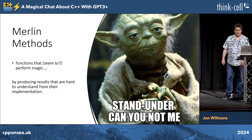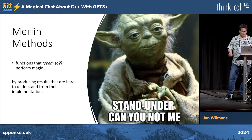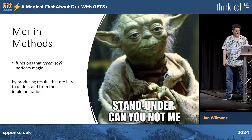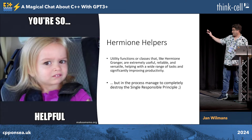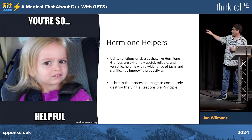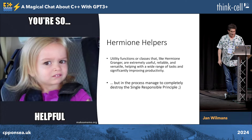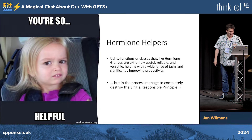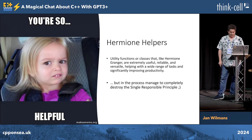And of course we have a Merlin method — this is not Merlin, but it's a method that seems to do magic for some reason and nobody understands exactly why. This is all made up by ChatGPT — I didn't edit the slides, I just added the picture, and the text is completely generated by ChatGPT. Apparently, like Hermione Granger: extremely useful, reliable, but in the process managed to completely destroy the single responsibility principle.